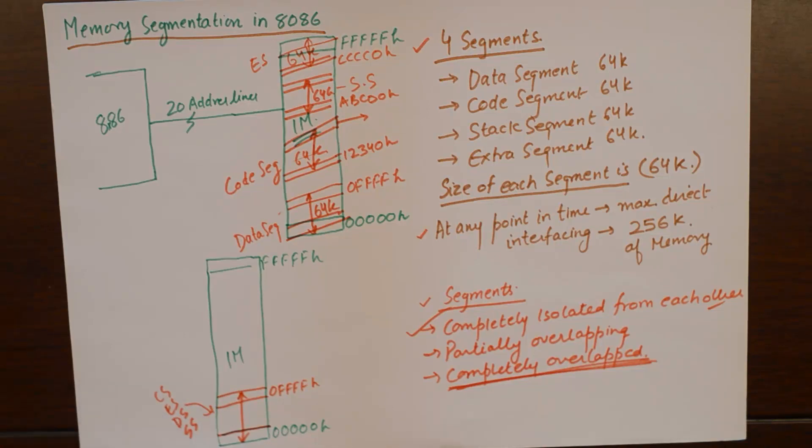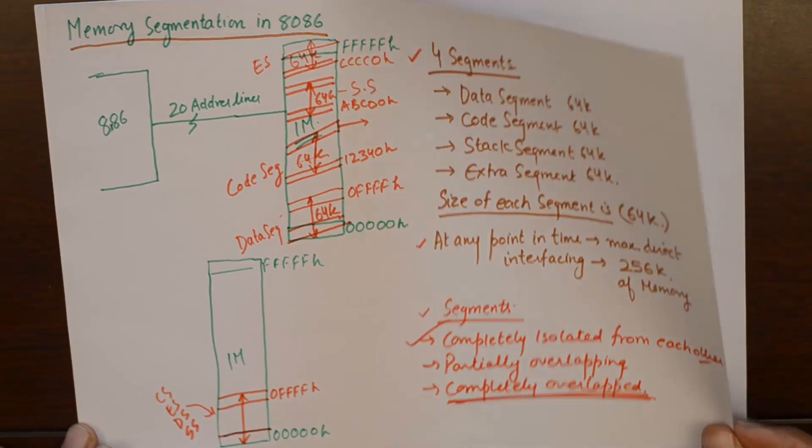Obviously the last address of the segment can easily be calculated by adding FFFFH into it, because each segment is of 64K. So once we know the starting address of the segment, the last address can automatically be found out. Now the answer to that question is, in the architecture of 8086, you will find 4 special function registers.